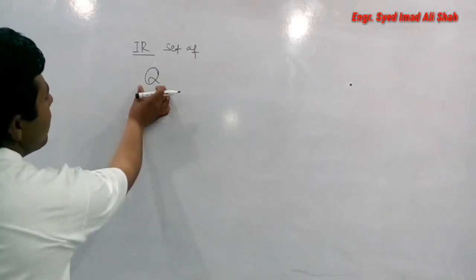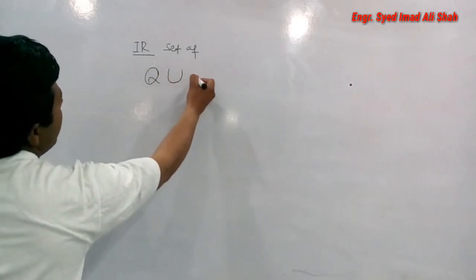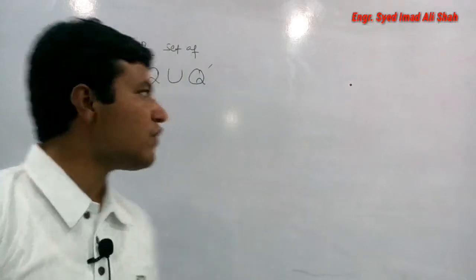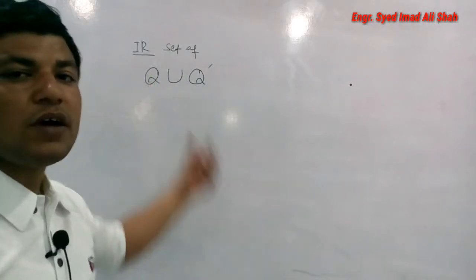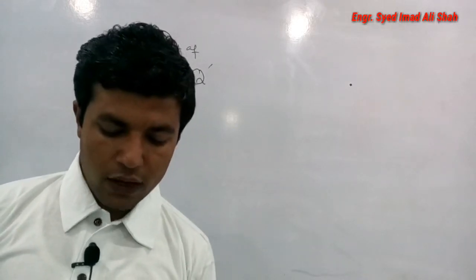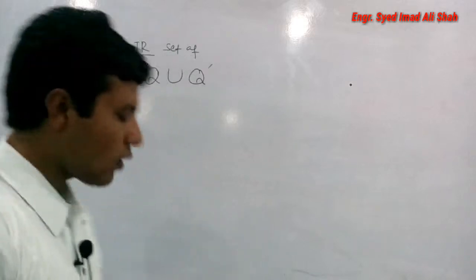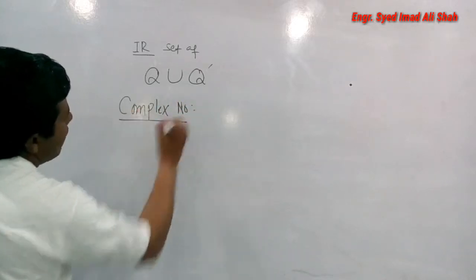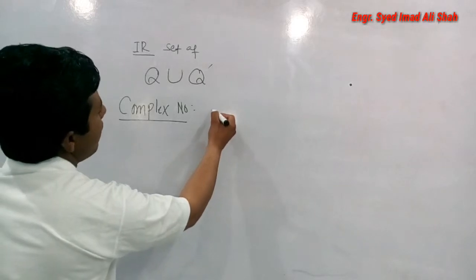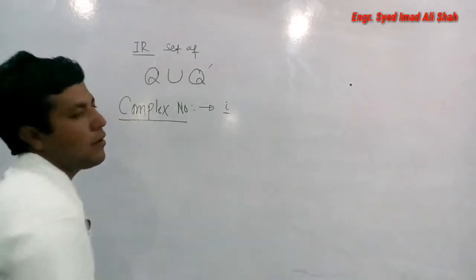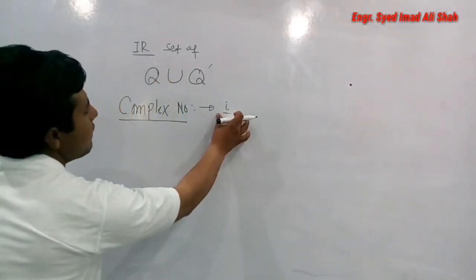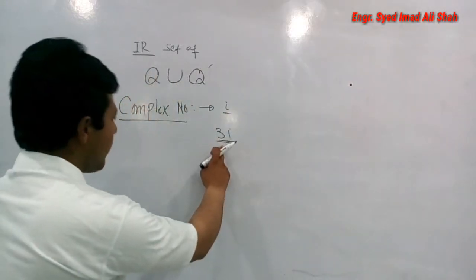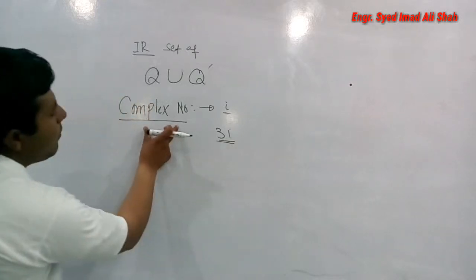Rational numbers کے لئے symbol استعمال ہوتا ہے اور irrational numbers کے ساتھ ان دونوں کا union لے لیں تو جو set حاصل ہوتا ہے اس کو real number set کہتے ہیں۔ Complex numbers یاد رکھیں - complex number وہ numbers ہوتے ہیں جن میں iota ہوتا ہے، جو iota پر مشتمل ہوتے ہیں۔ For example، 3 iota ہمارے پاس complex number ہے۔